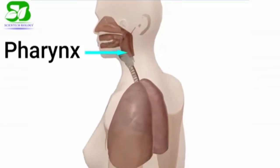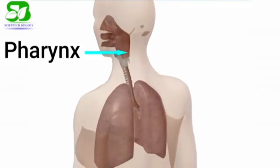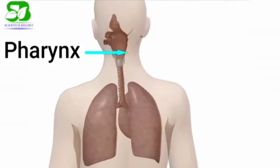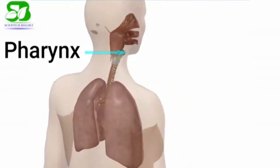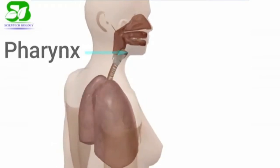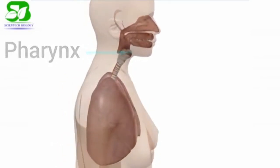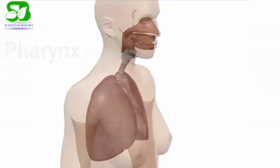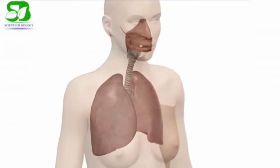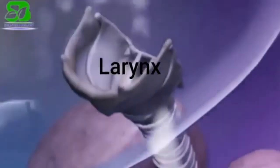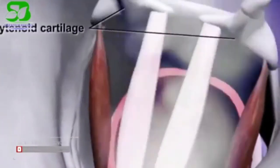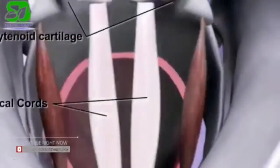The windpipe, bronchi, and lungs are key structures. The epiglottis is a cartilaginous flap at the root of the tongue. The larynx leads into the windpipe. This is the rinse zone region.